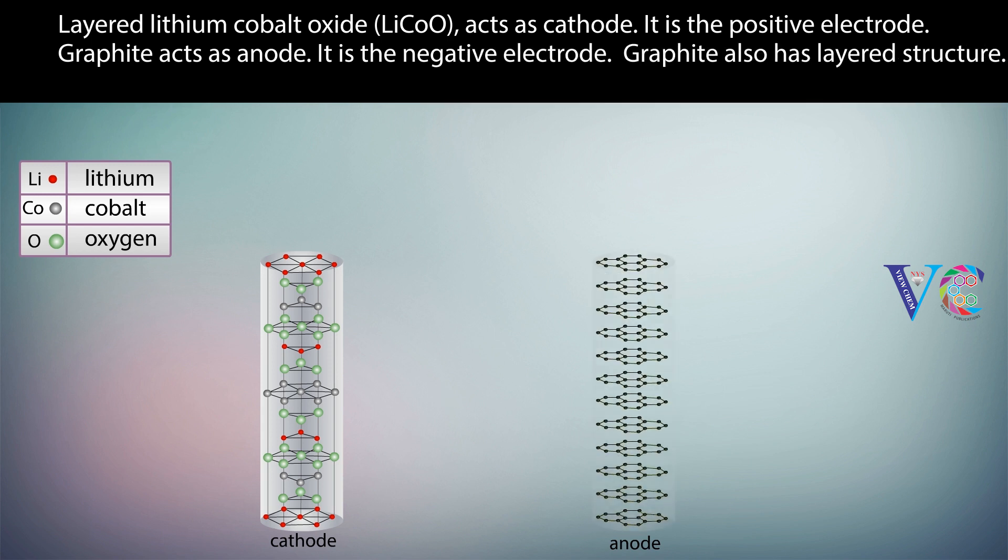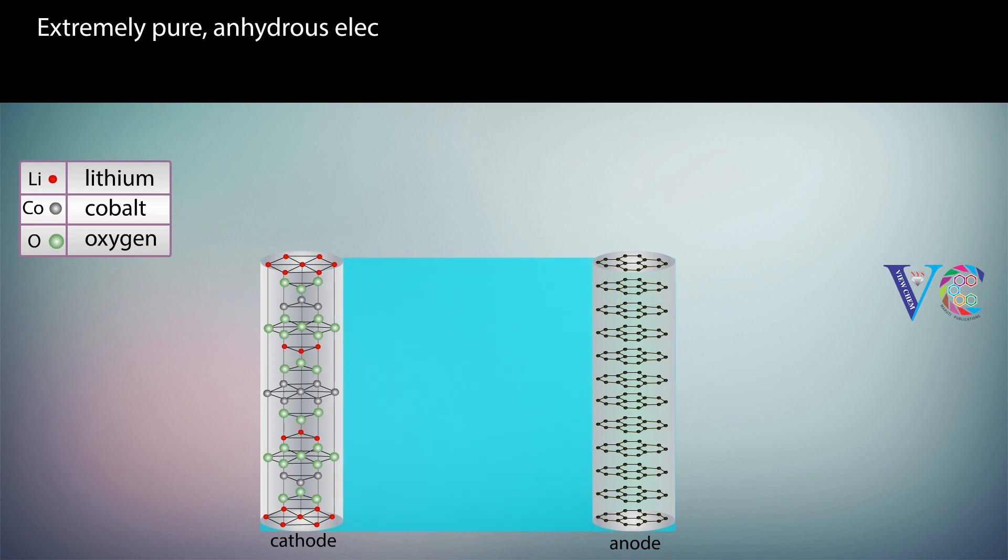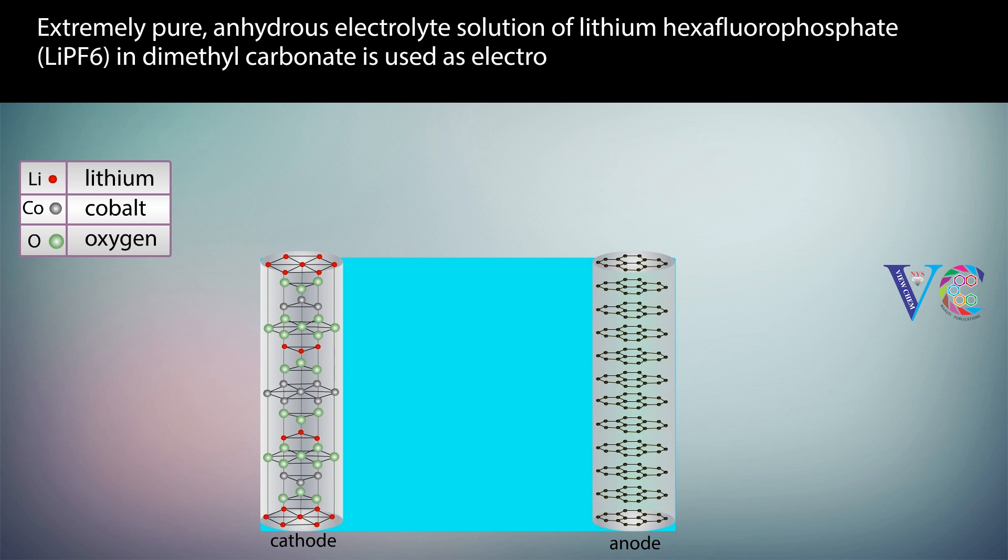Graphite also has layered structure. Extremely pure, anhydrous electrolyte solution of lithium hexafluorophosphate in dimethyl carbonate is used as electrolyte.